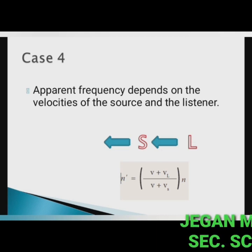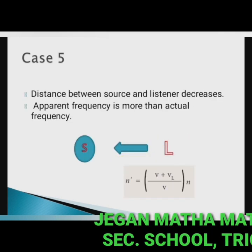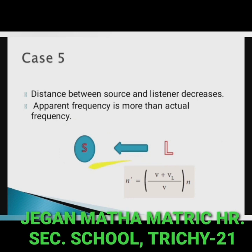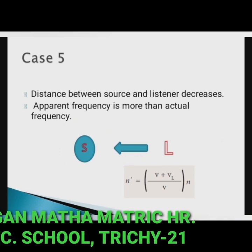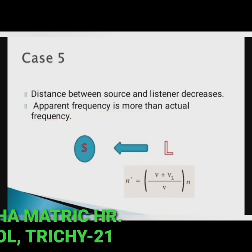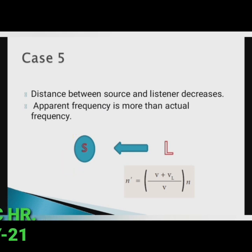Case 5 — source at rest, listener moves towards the source. The distance between source and listener decreases, so the apparent frequency is more than the actual frequency. Since the source is at rest, Vs = 0, and the expression becomes: n' = (V + Vl) / V × n.